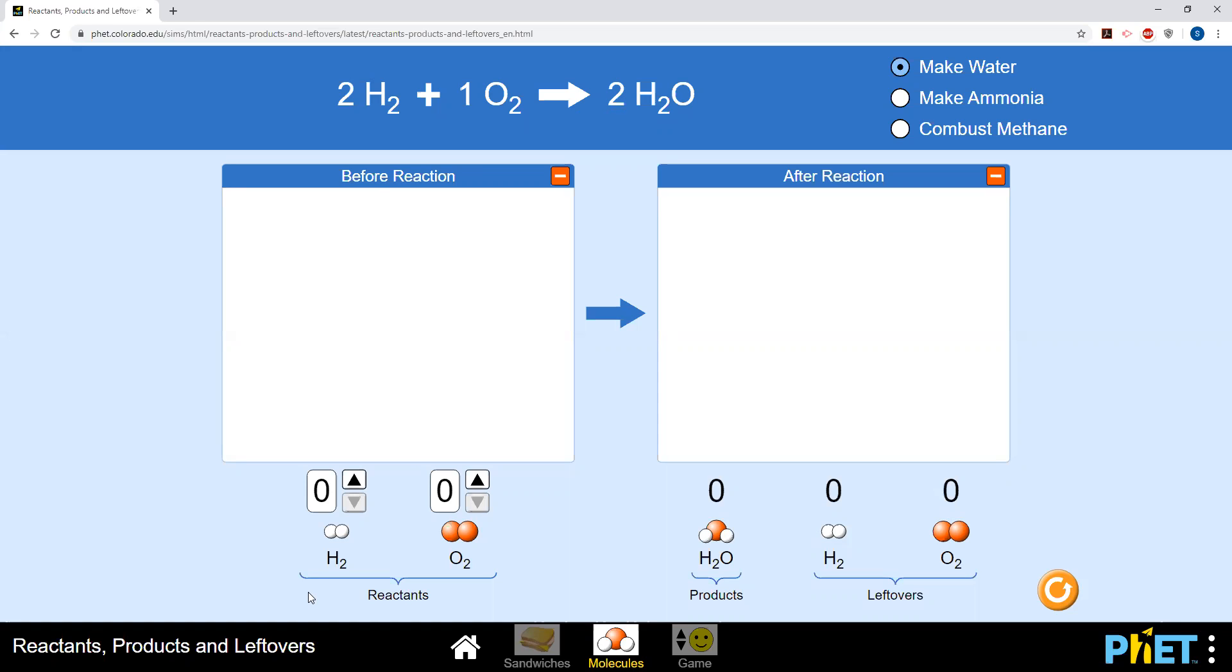A specific number of moles of both H2 and O2 will be added and after the completion of the process, determine how many moles of water are formed and who is the limiting reagent and who is the excess reagent by mentioning the number of moles that are left afterwards.